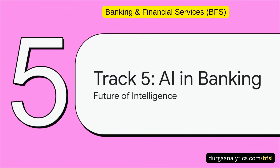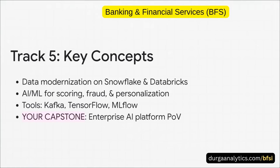Finally, we look to what's next. Track Five is all about building the future — the next generation of financial intelligence. This is where it all comes together. You'll learn data modernization on platforms like Snowflake and Databricks. You'll apply AI and machine learning to everything from credit scoring to fraud detection. You'll get your hands dirty with tools like Kafka and TensorFlow. And your capstone project? You will design an enterprise-grade AI platform for bank-wide credit decisioning. This isn't a toy project — this is exactly the kind of high-impact work that top consulting firms and banks are tackling right now. You're not just learning about the future, you are architecting it.